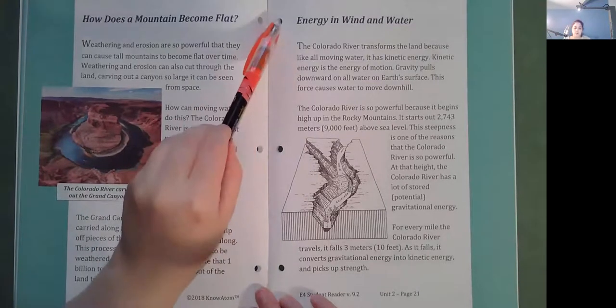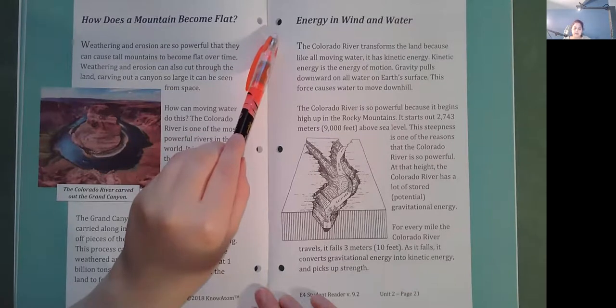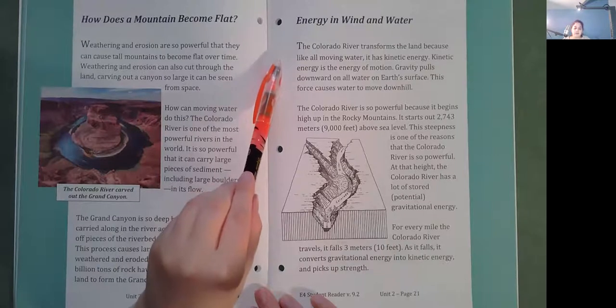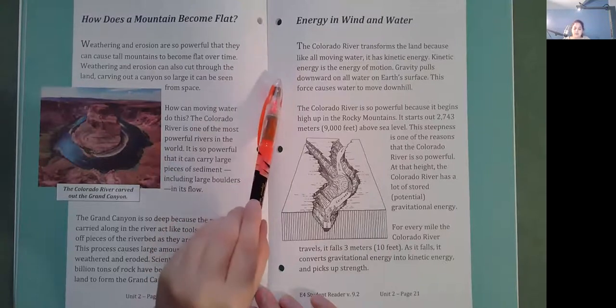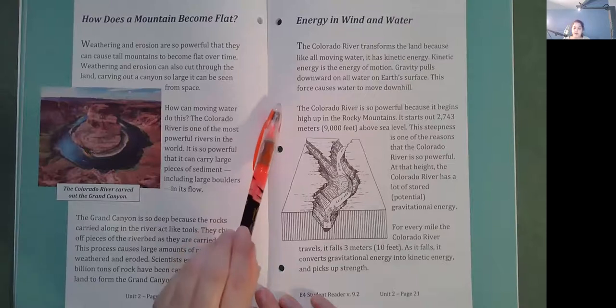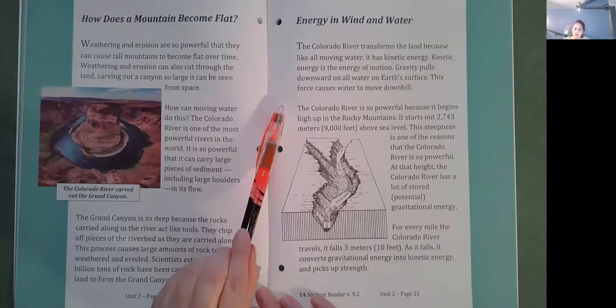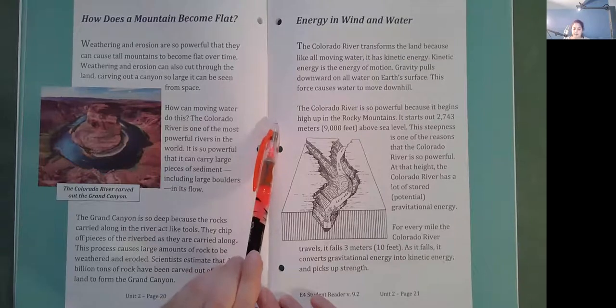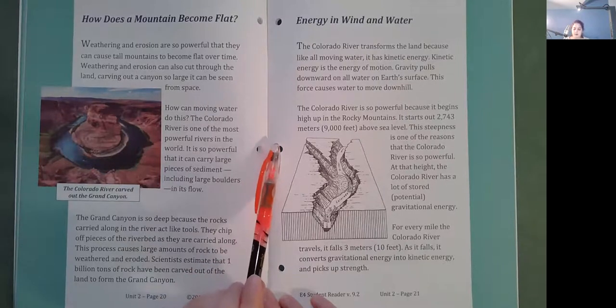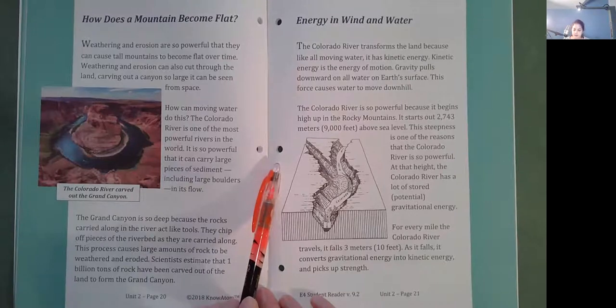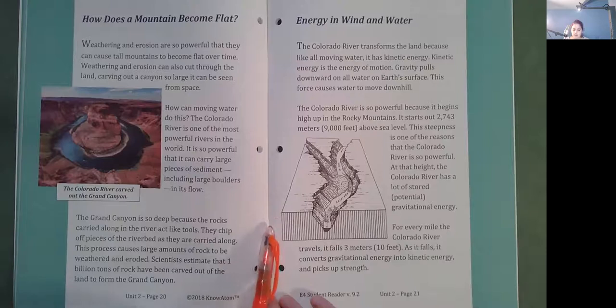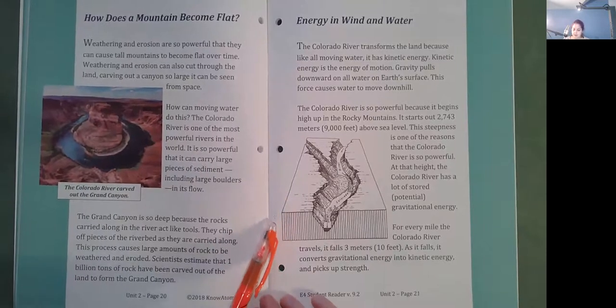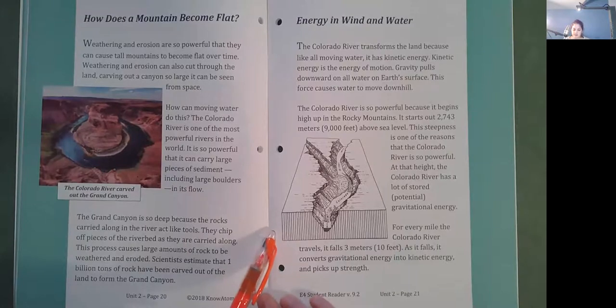Energy in wind and water. The Colorado River transforms the land because like all moving water, it has kinetic energy. Kinetic energy is the energy of motion. Gravity pulls downward on all water on Earth's surface. This force causes water to move downhill. The Colorado River is so powerful because it begins high up in the Rocky Mountains. It starts out 2,743 meters or 9,000 feet above sea level. This steepness is one of the reasons that the Colorado River is so powerful. At that height, the Colorado River has a lot of stored or potential gravitational energy. For every mile the Colorado River travels, it falls 3 meters or 10 feet. As it falls, it converts gravitational energy into kinetic energy and picks up strength.